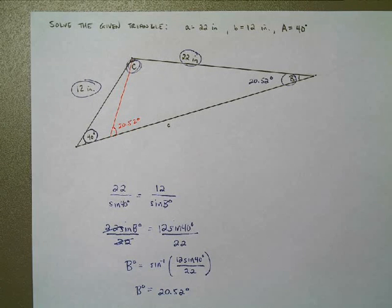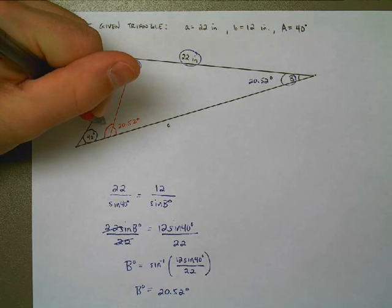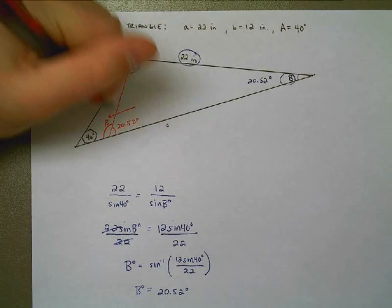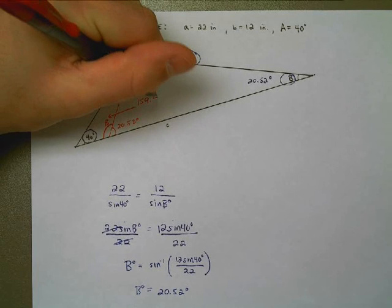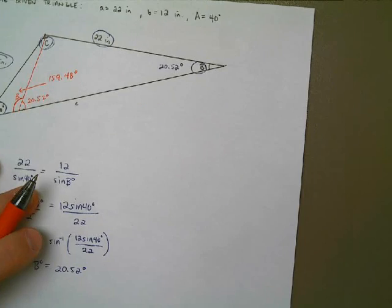And this angle here would be 20.52 degrees as well. If the second triangle existed, there would be our second line, something like this. And if that angle is 20.52 degrees, then we can take 180 minus it to find what our second B value would be. So I'll take 180 minus 20.52, and I find out that this angle B in here would have to be 159.48 degrees.